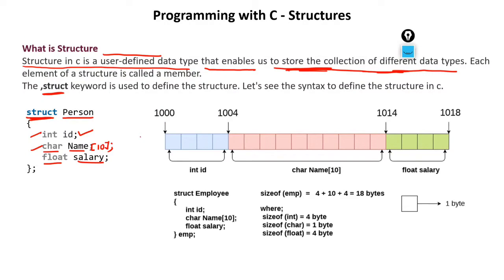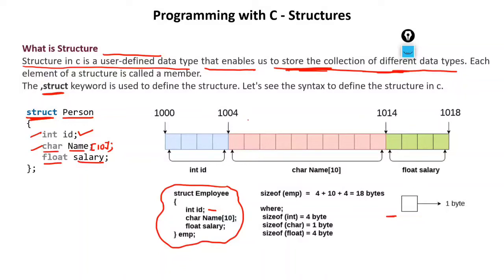Looking at the memory representation: if integers take 4 bytes, the first 4 bytes are allocated for integer ID. Since character takes 1 byte, 10 bytes are reserved for the name character array (addresses 1004 to 1014). Then float salary takes 4 bytes from 1014 to 1018. The total size of the structure is 4 + 10 + 4 = 18 bytes.